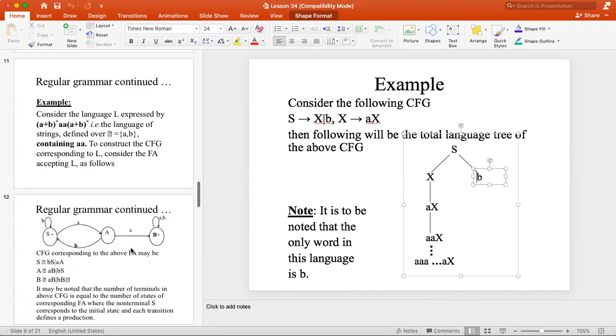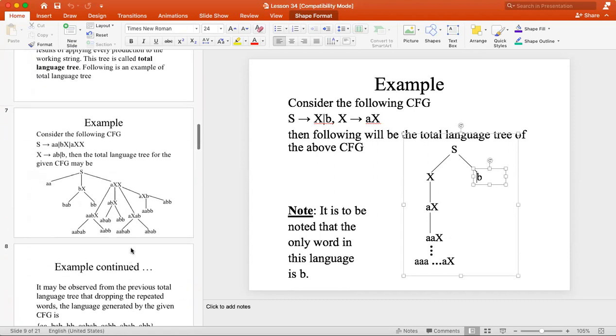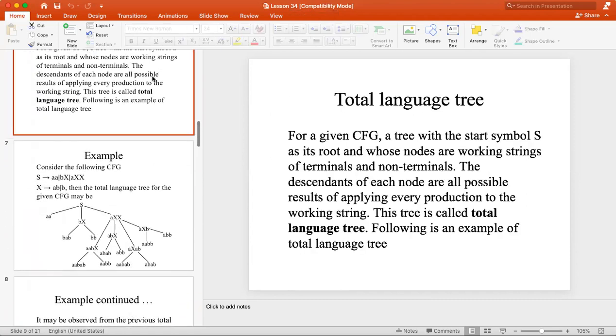So total language tree is our topic today. What is the total language tree? For a given CFG, a tree with the star symbol as its root, and its nodes are strings of terminals and non-terminals, the descendants of each node are all possible results of applying every production to the working string. This tree is called the total language tree.